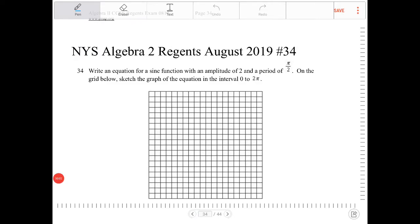Write an equation for a sine function with an amplitude of 2 and a period of pi over 2. On the grid below, sketch the graph of the equation in the interval from 0 to 2 pi.